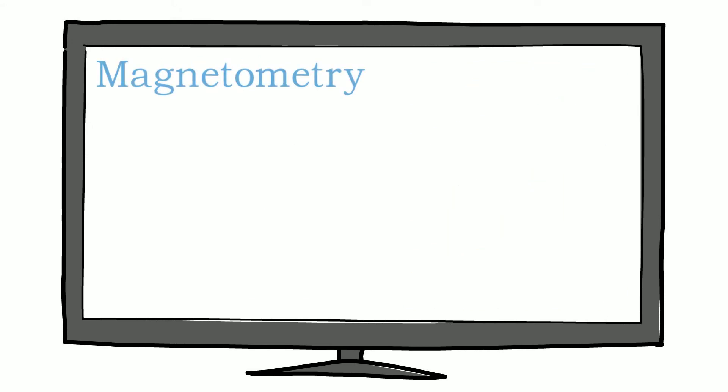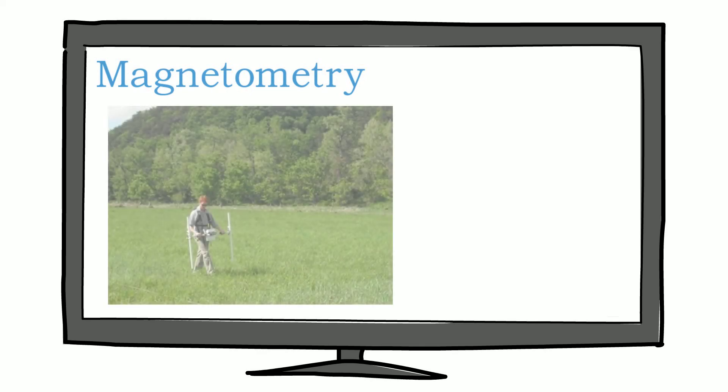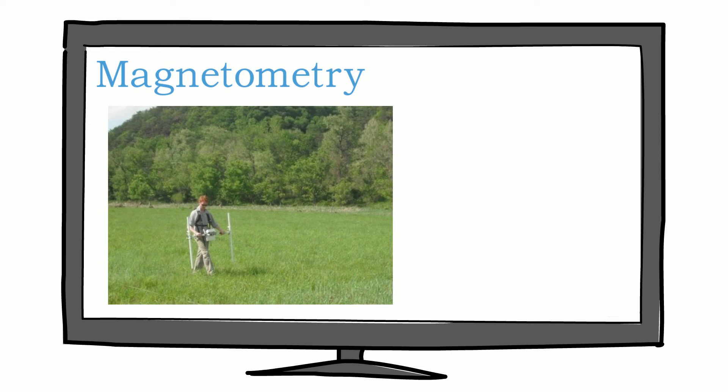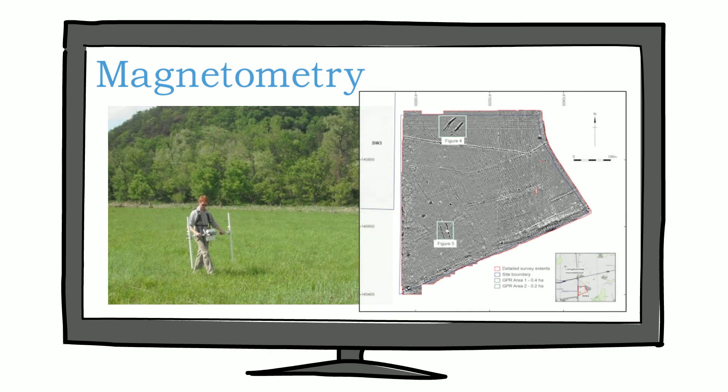Magnetometry detects anomalies in the earth's magnetic compounds and can detect buried features like ditches, pits, brick and burnt materials such as ovens and hearths. Magnetometry can produce quick and impressive results but is not very effective in urban areas.